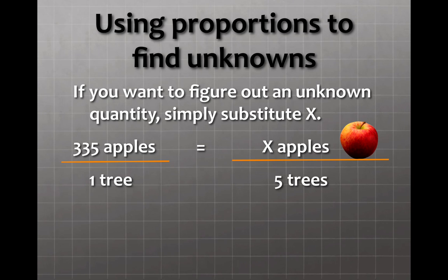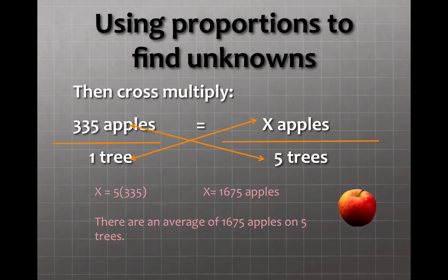Let's set up the ratios. 335 over 1 is equal to x over 5. You notice that the units are the same on the top and on the bottom of both sides of the equal sign. Then what do you do? You cross multiply. Cross multiply just means that you multiply the number on the top left with the number on the bottom right. At the same time, you multiply the number on the bottom left with the number on the top right. In this case, x is equal to 5 times 335, x is equal to 1,675 apples. Therefore, you will need to buy boxes that can hold 1,675 apples for your trees.